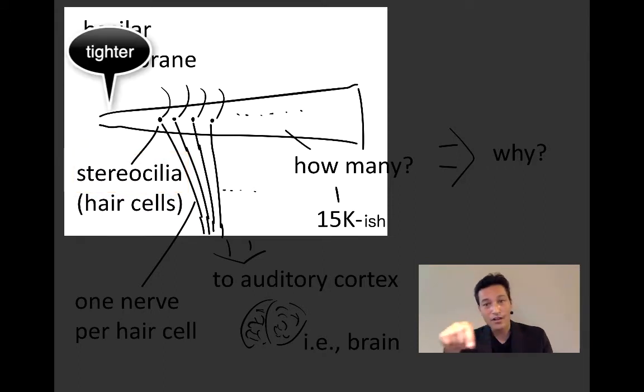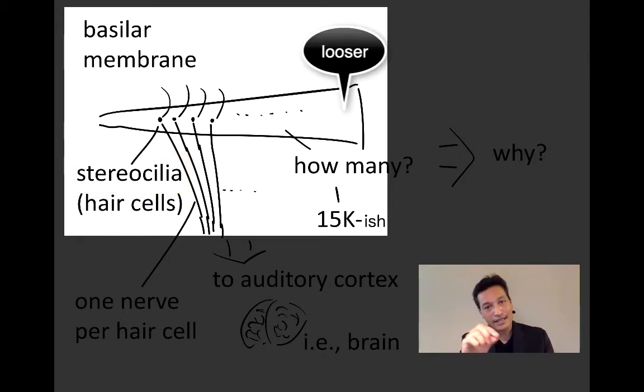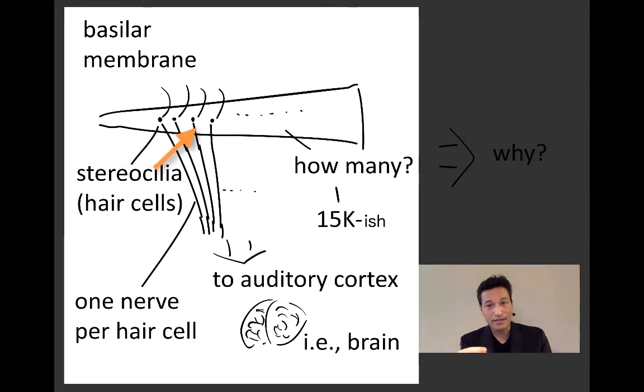They're lined up from the tight end all the way to the loose end, and each one of these hair cells has a nerve connected to it. Those nerves collectively are called the auditory nerve, and they go up into our auditory system, into the brain.